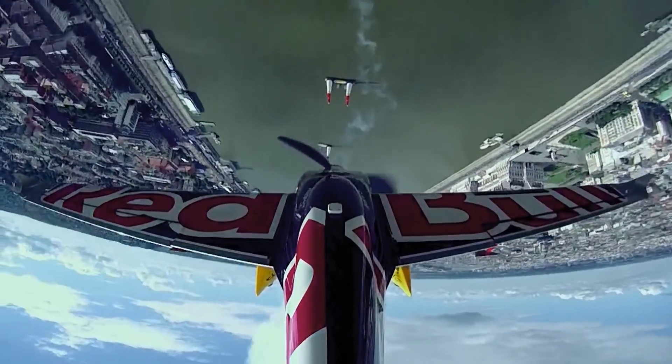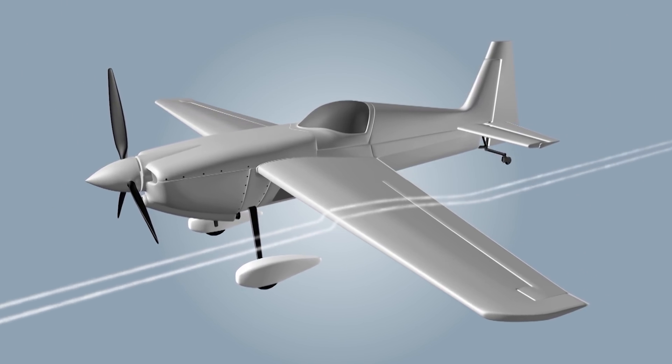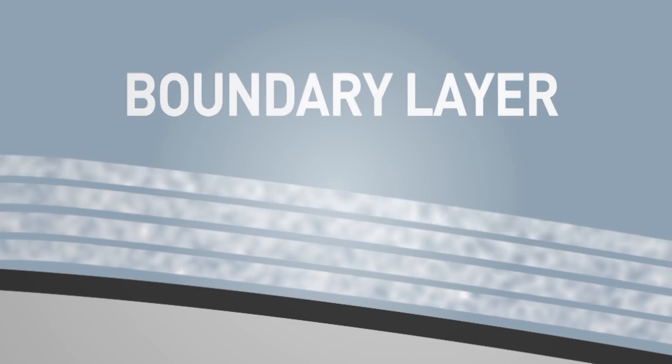To understand how vortex generators work, we need to understand what the air interacting with the wing is doing. If we imagine the wing is sitting still and the air is flowing past at some speed, the velocity of the air will be slowed down by its interaction with the surface of the wing. This area from where the air is flowing at normal speed down to where it is slowed by the wing is called a boundary layer.